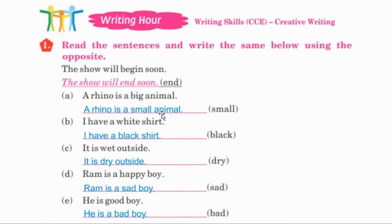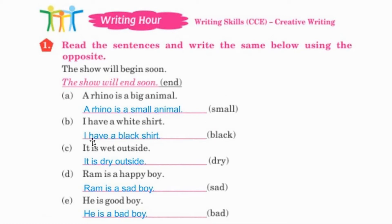B. I have a white shirt. Opposite of white is black. All of you write: I have a black shirt.